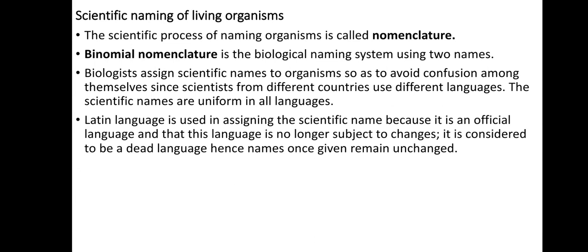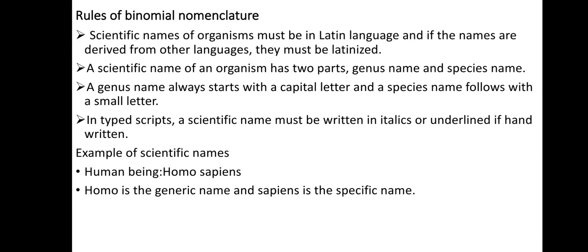Now let's see the rules of binomial nomenclature. These rules are applied when naming organisms with two names. The first rule is that scientific names of organisms must be in Latin, and if the names are derived from other languages they must be Latinized. This is very important — it has to be written in Latinized form if it is not originally from the Latin language.